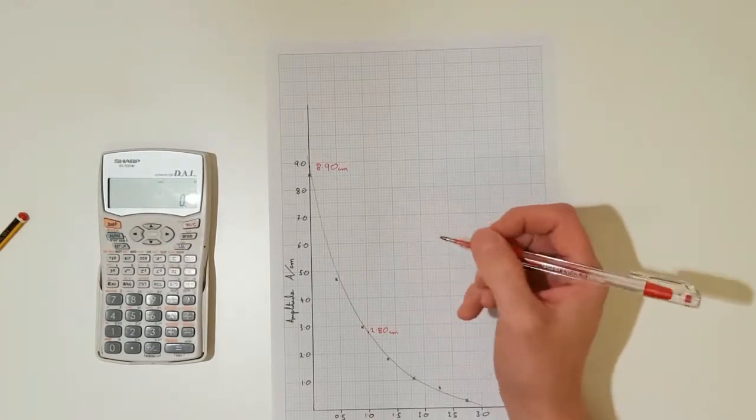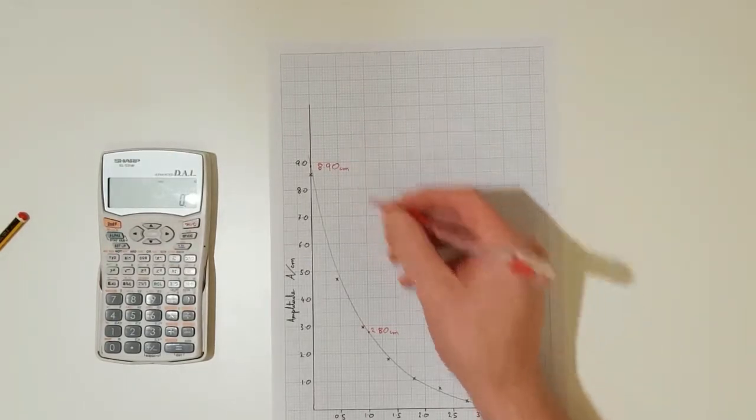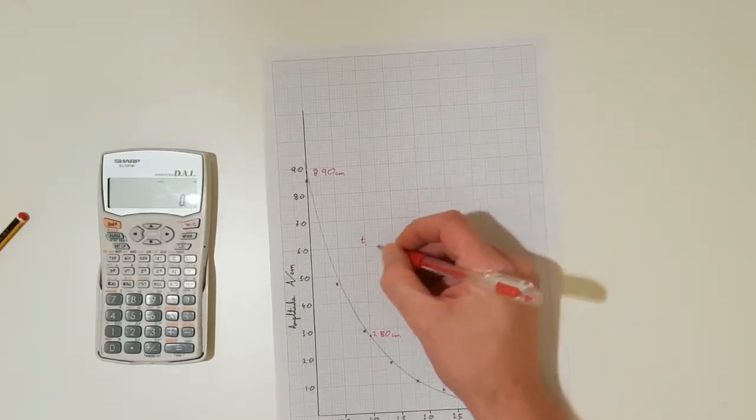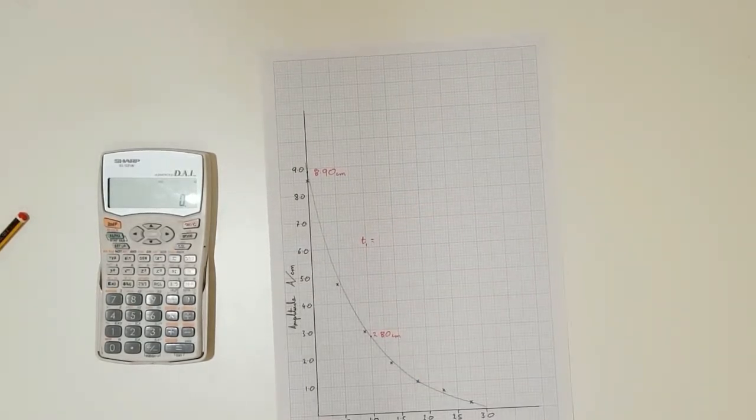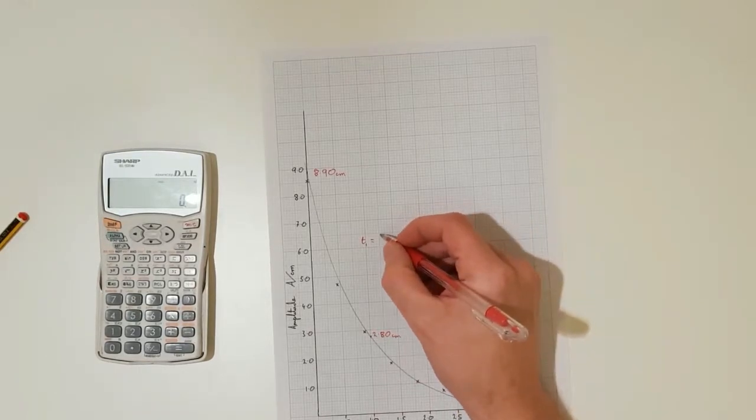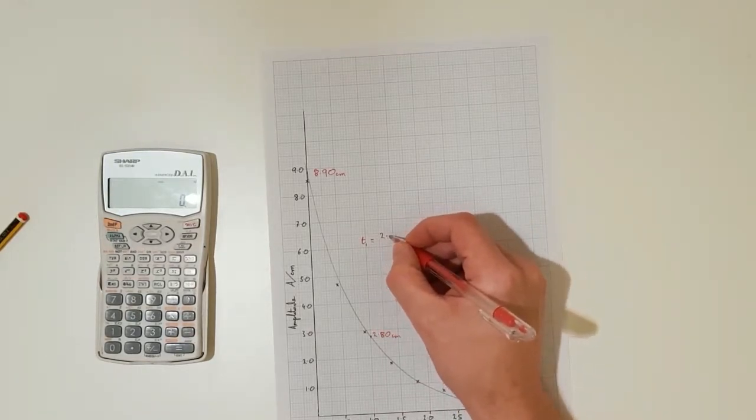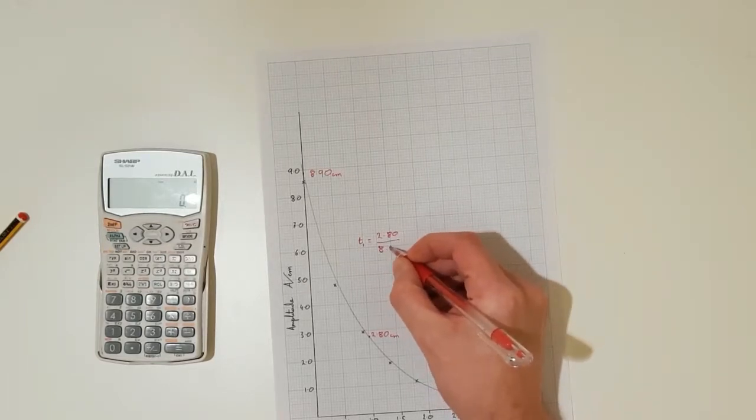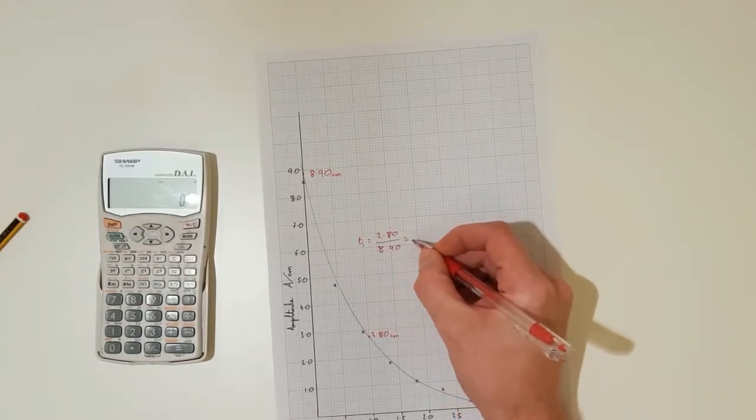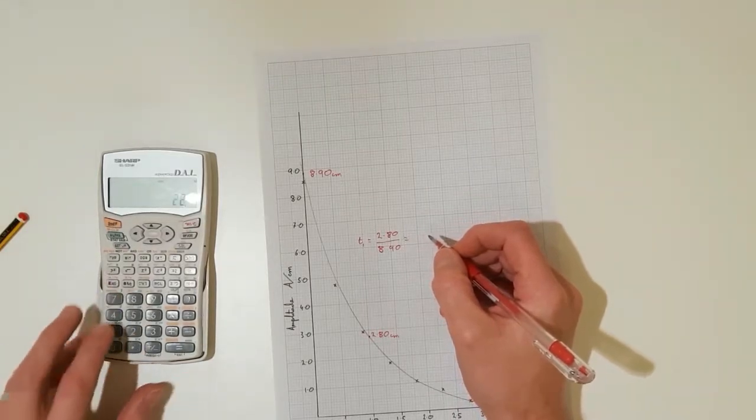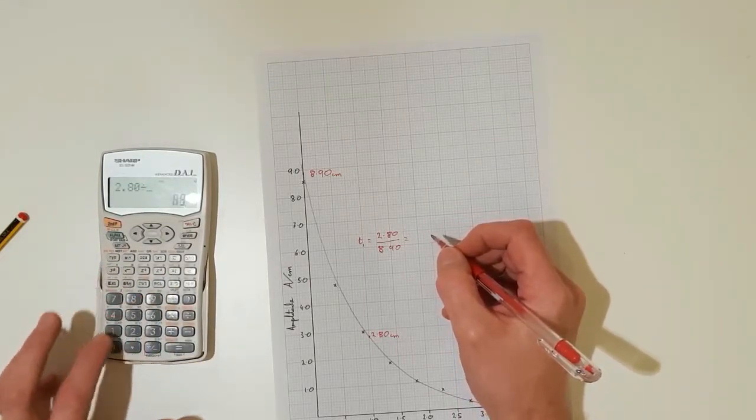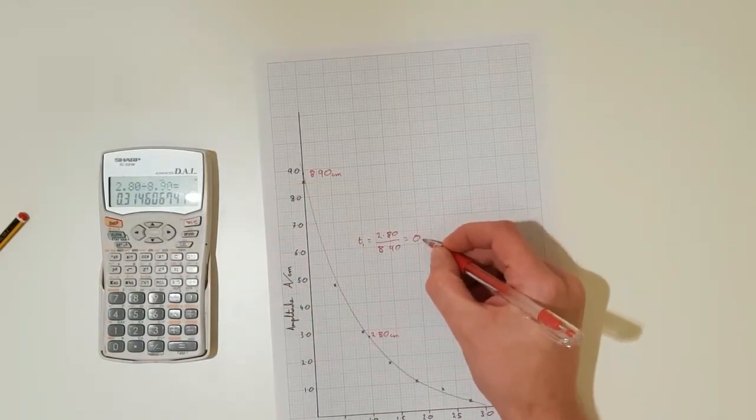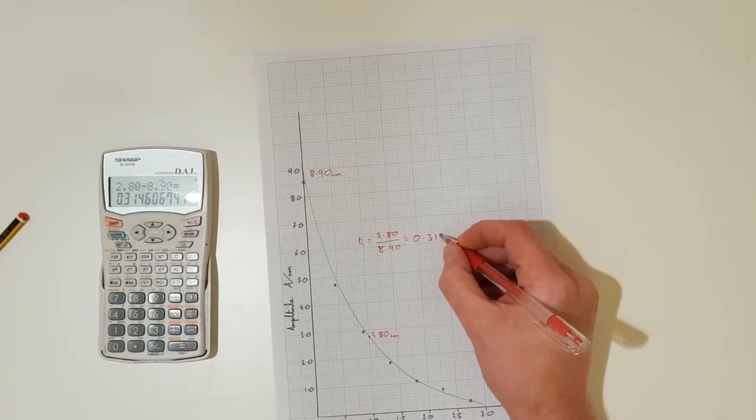I want to now work out the fractional decrease in the amplitude. So for this first interval we will call T1, the fractional decay in the amplitude is 2.80 divided by 8.90, which gives me a decay of 0.315.